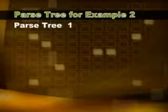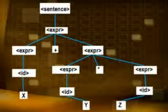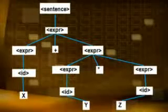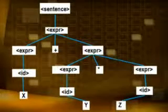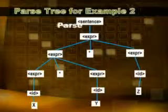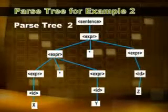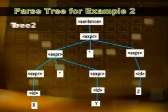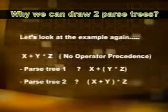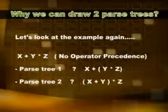In order to find the ambiguity we'll draw the parse trees. We can draw two parse trees. How can this happen? This happens because there isn't any operator precedence. We can either multiply y by z and add it to x, or add x and y and then multiply it by z. This is why we can draw two parse trees and the grammar is ambiguous.